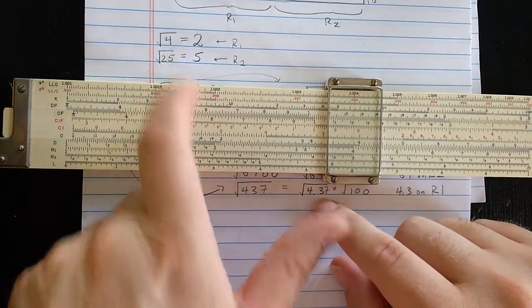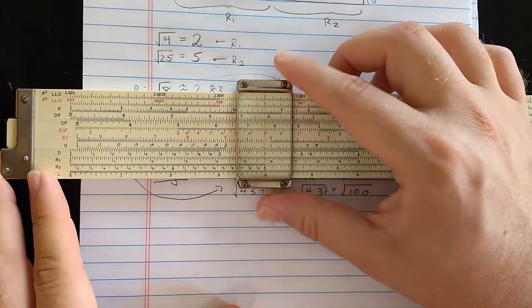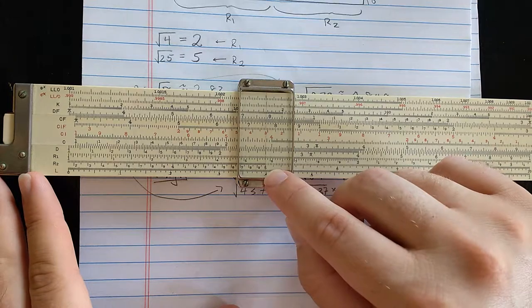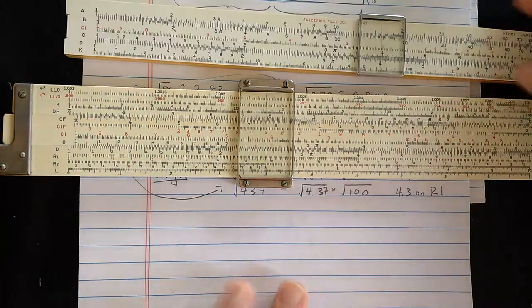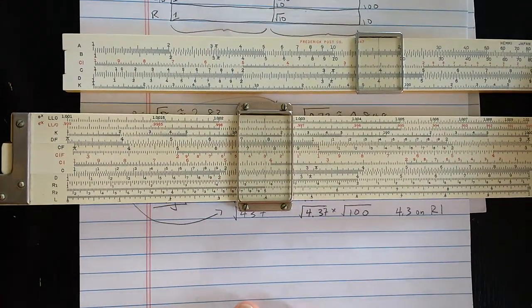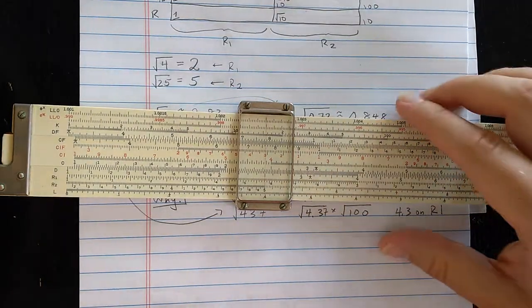If I have a number which is two digits long, like 25, and I set that on D, then I read 5 on the root scales, but I read that on R2. So it's very similar to the regular A and B scales in that you need to know how many digits your number has to the left of the decimal.